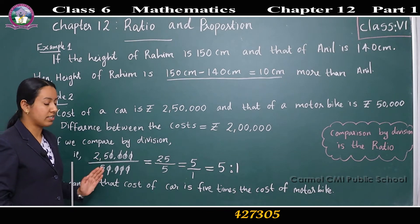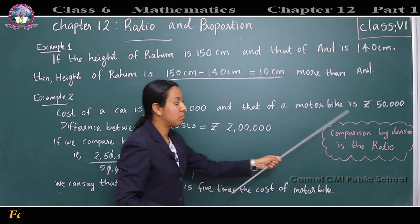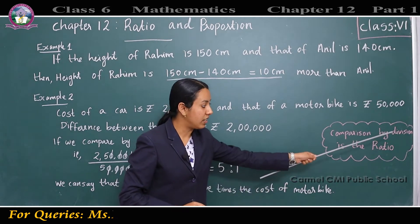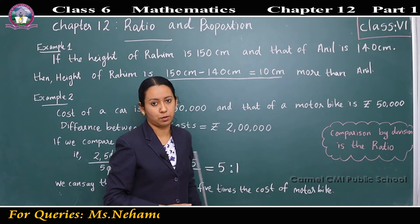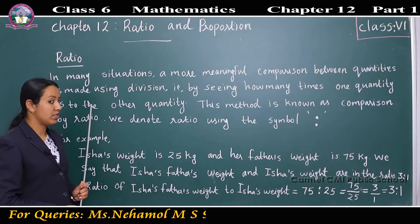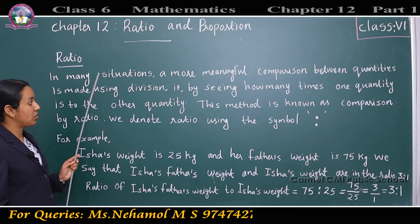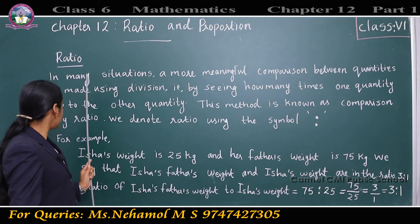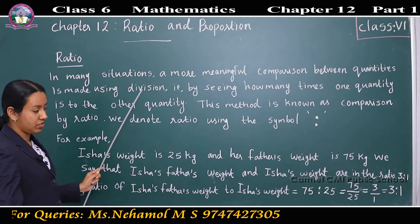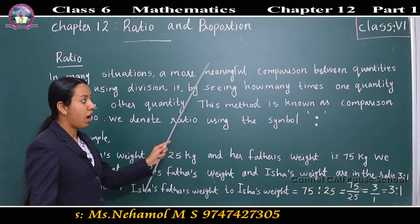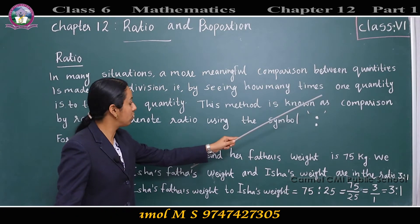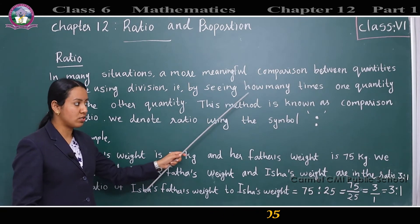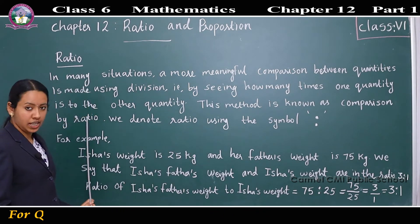This comparison by division is called the ratio. In many situations a more meaningful comparison between quantities is made using division — that is, by seeing how many times one quantity is to the other quantity. This method is known as comparison by ratio.